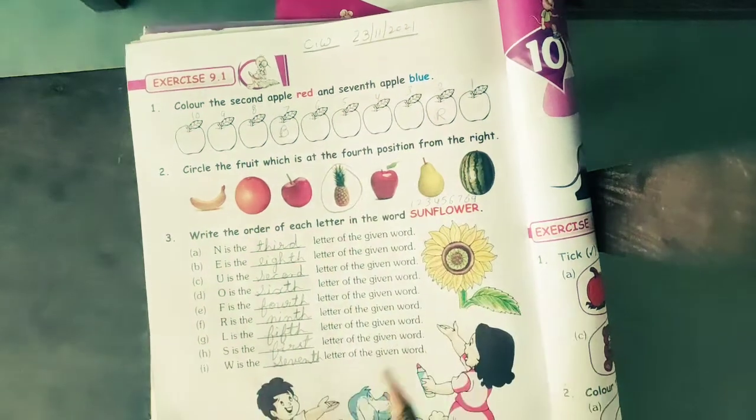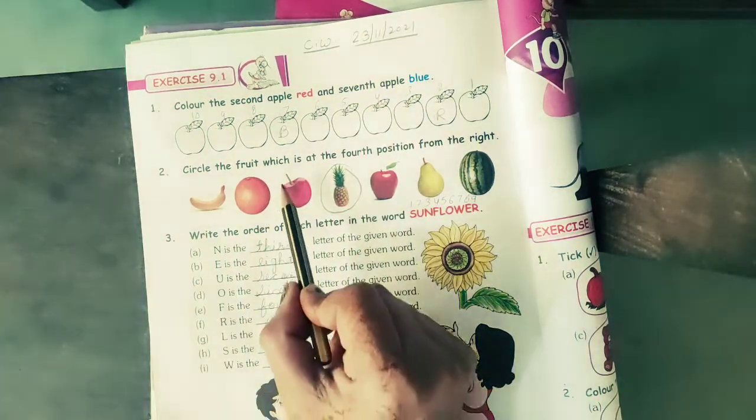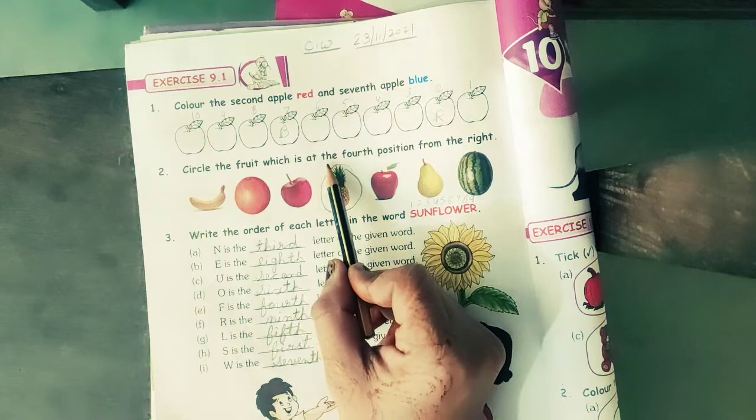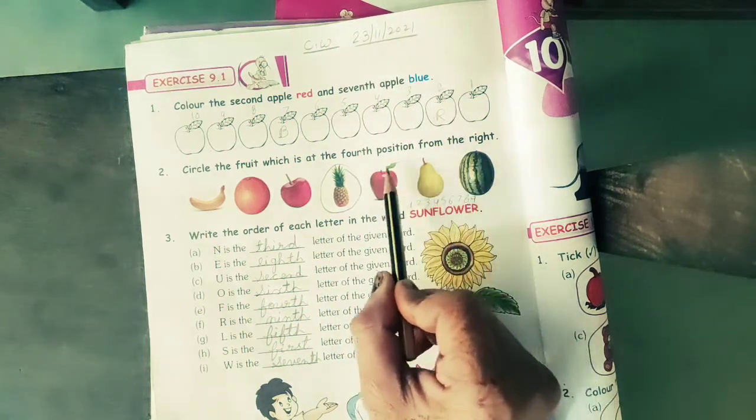Now come to question number 2. Circle the fruits which is at the 4th position from the right.